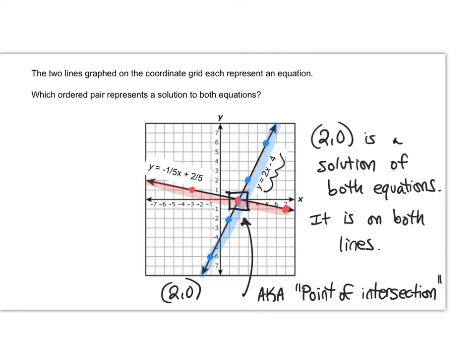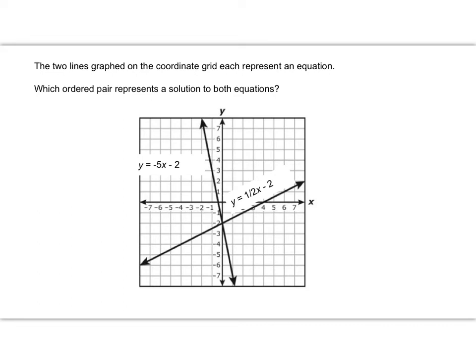Let's look at another example. Now on this one, you already know what it means for a point to be a solution to both equations. So I'm just going to ask you, which ordered pair represents a solution to both equations? Can you find it on the graph? Where would it be?